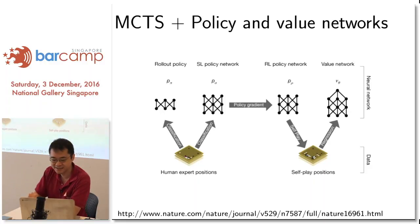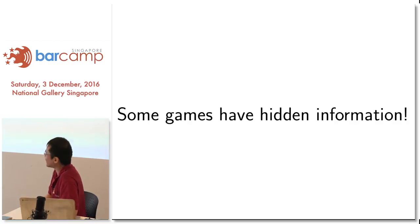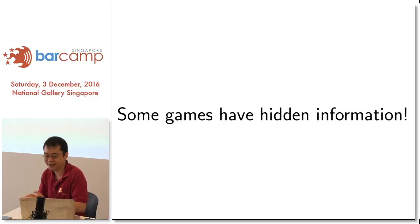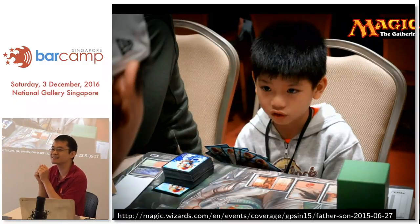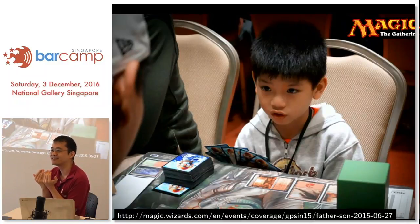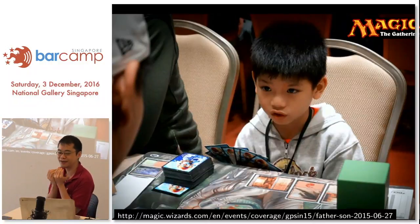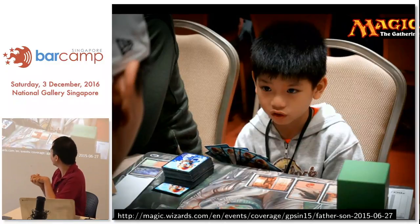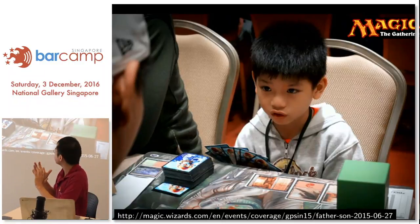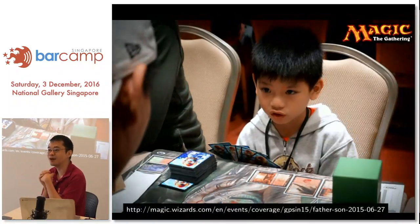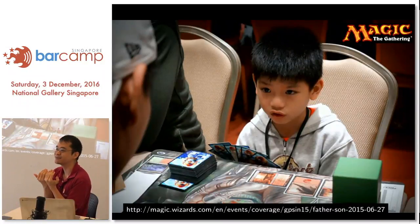There are two networks: the policy network, which knows how to make the next move and suggests a few candidate moves, and the value network, which predicts the score given a particular position. Even human beings can't tell who is going to win in Go, but this network apparently can — which is quite an amazing achievement. They combined these two networks with Monte Carlo Tree Search to give a dramatic improvement in performance.